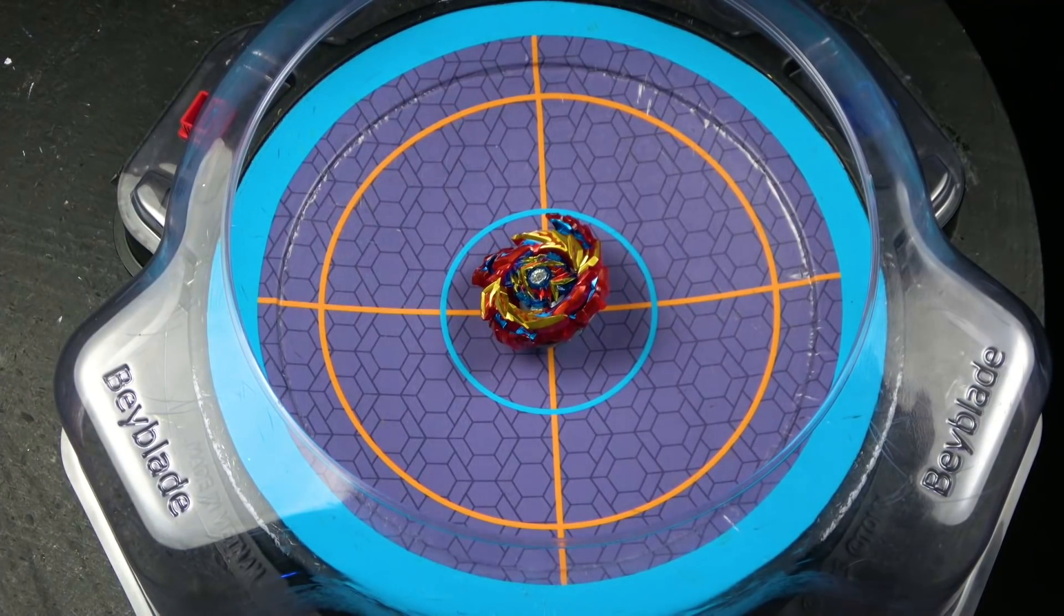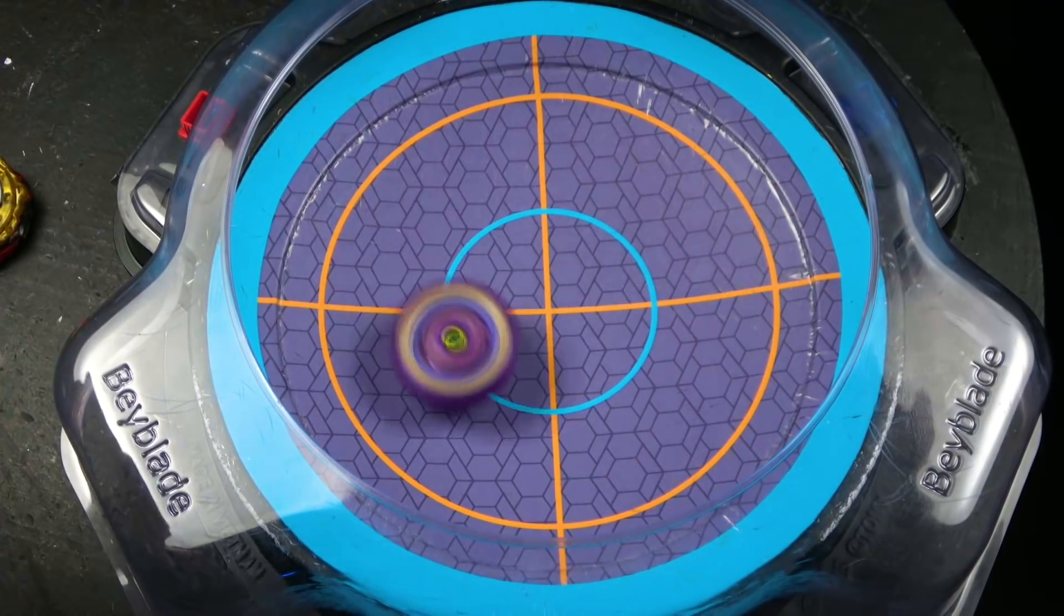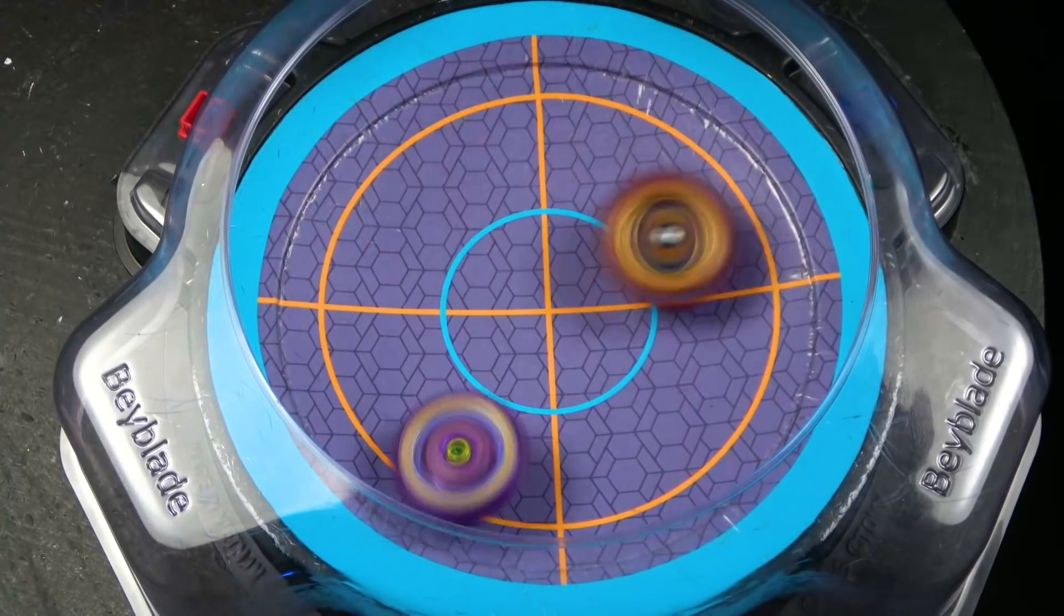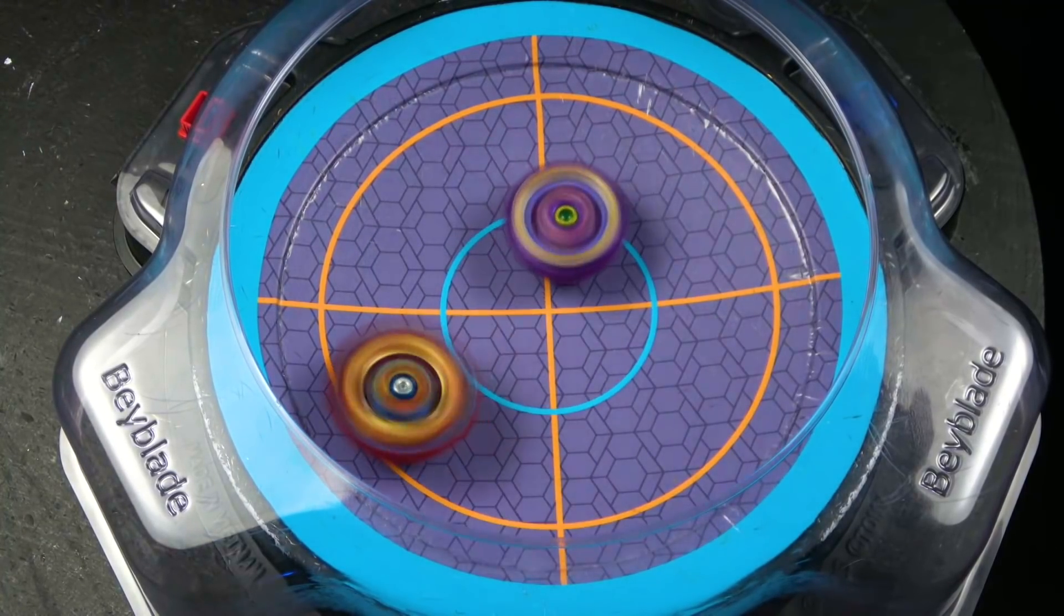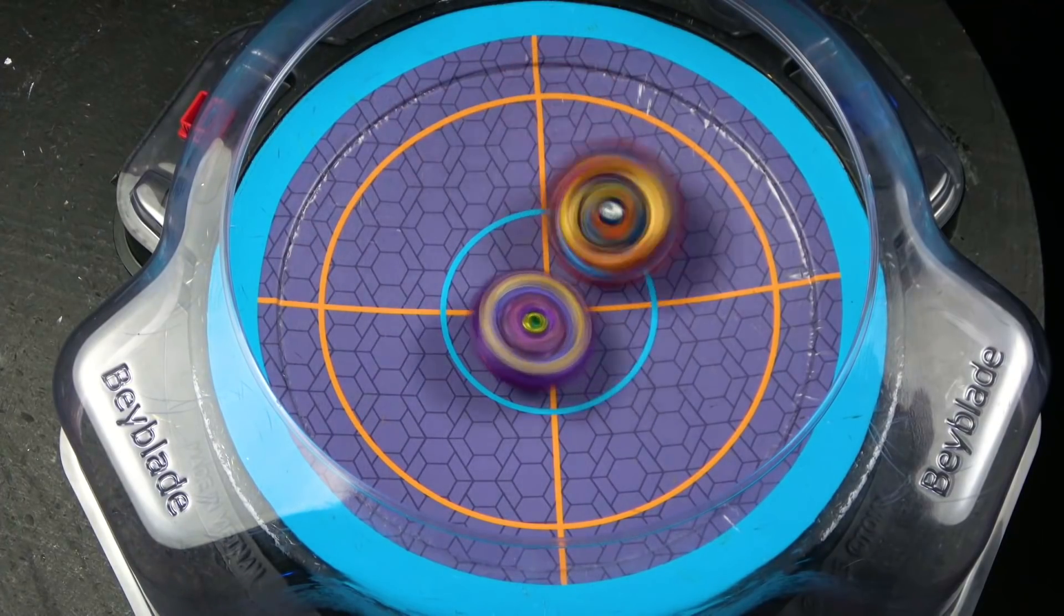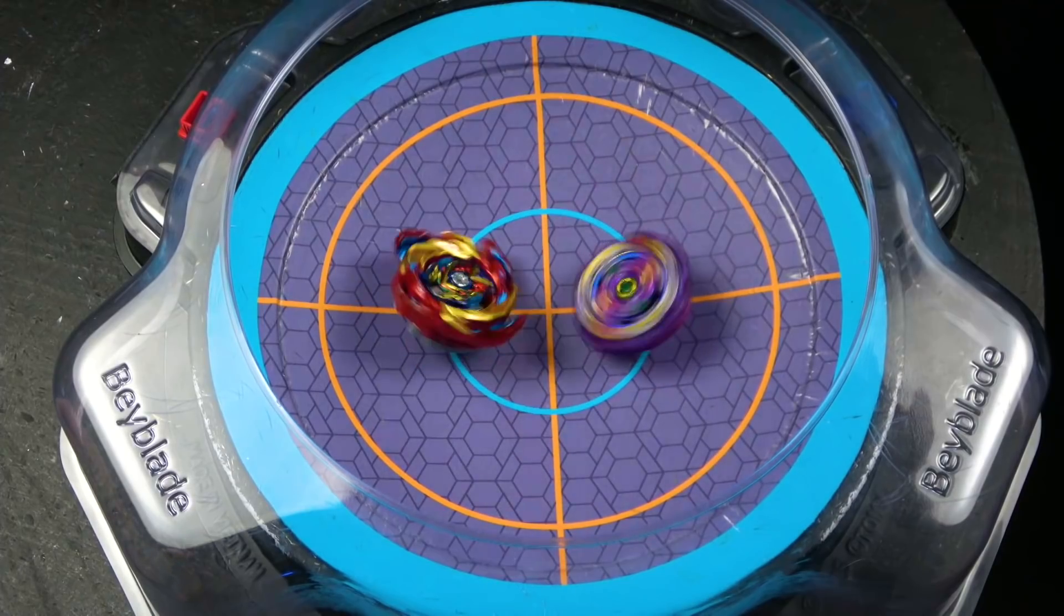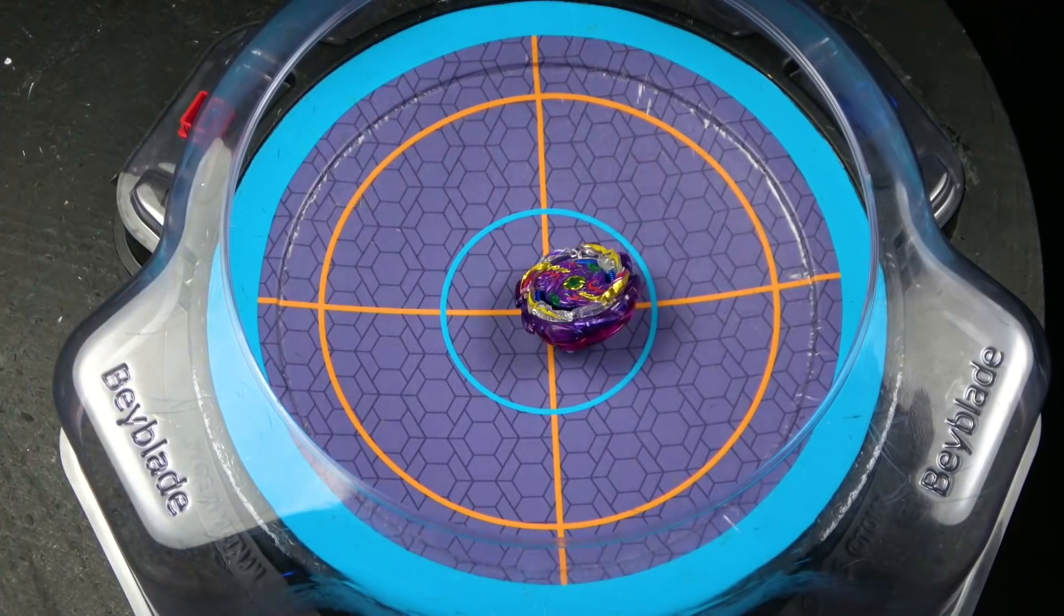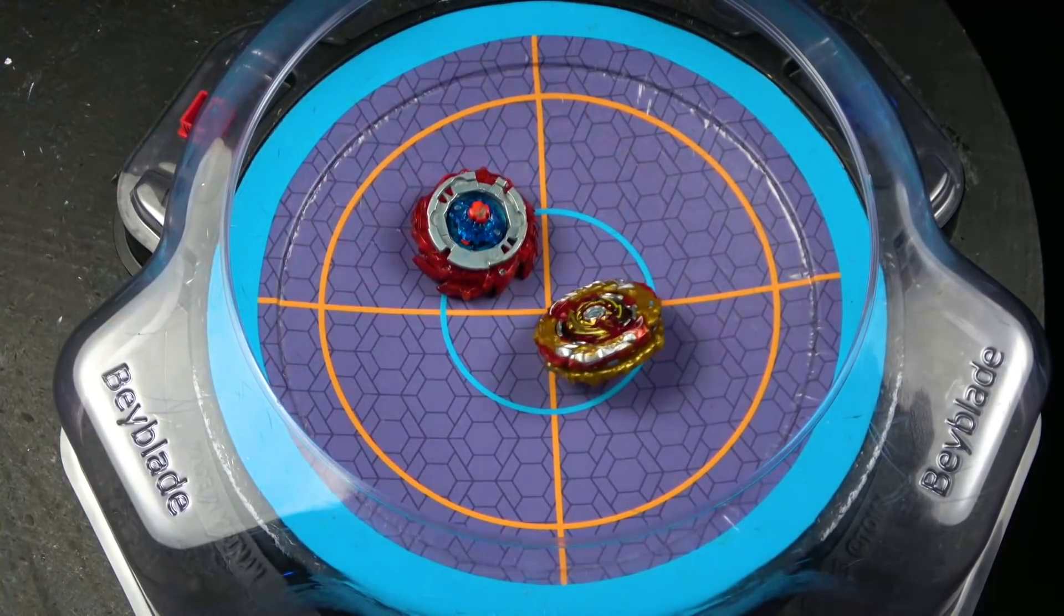We will end off we'll do Jet Wyvern and we'll end off with what is it? Right World Spriggan. The thing is the burn really just dips down in stamina. Wow even Jet Wyvern. It just sucks.